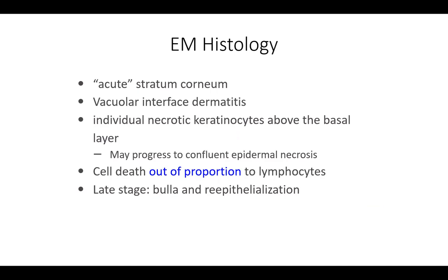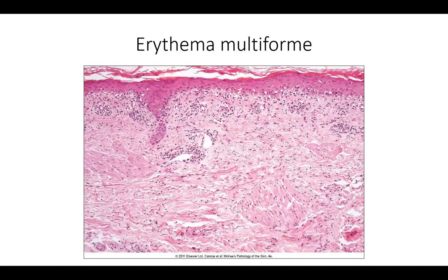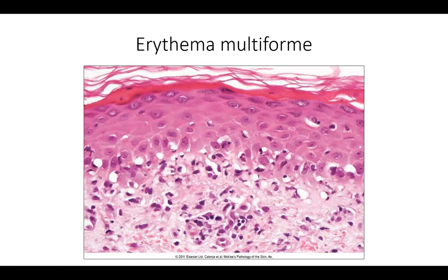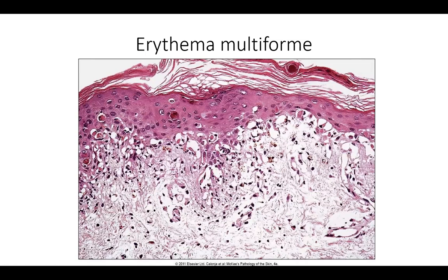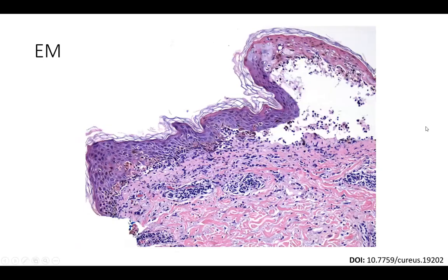On histology for erythema multiforme, you see confluent basal-vacuolar interface change, scattered dyskeratotic keratinocytes, and an acute basket-weave stratum corneum suggesting an acute process. There are more examples of basal vacuolar change with scattered dyskeratotic cells. In some cases there is more epidermal degeneration, and you can see a gradient from the outer to the inner edge where interface and dyskeratosis progress to even more epidermal necrosis, possibly lifting off like a bullous erythema multiforme with near full-thickness necrosis at the center.